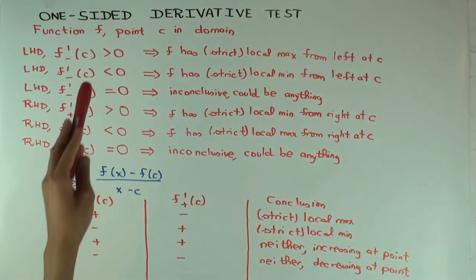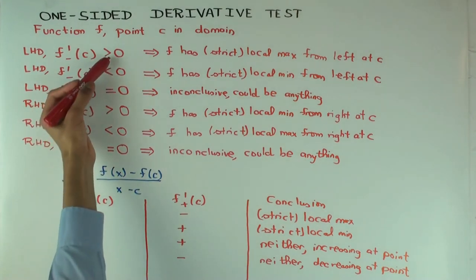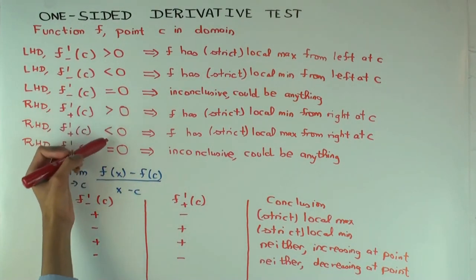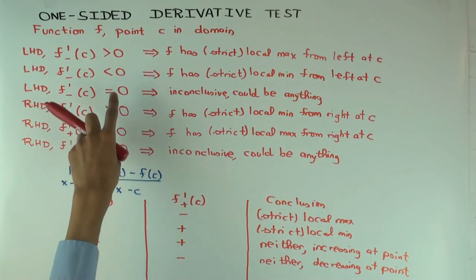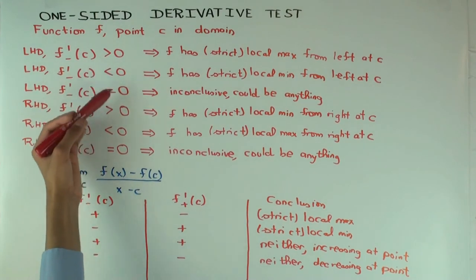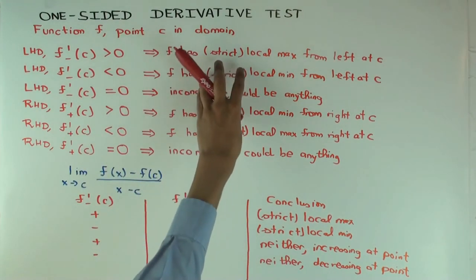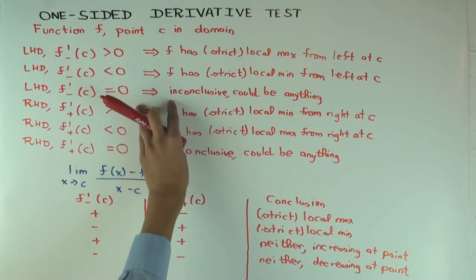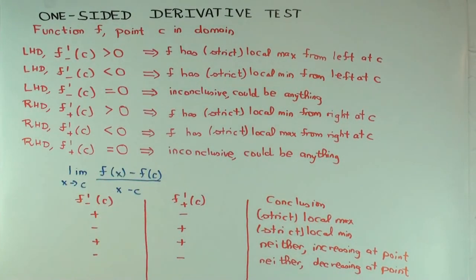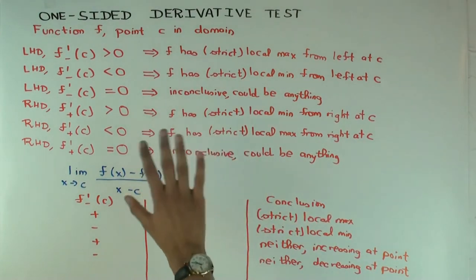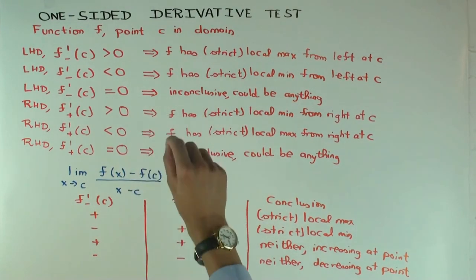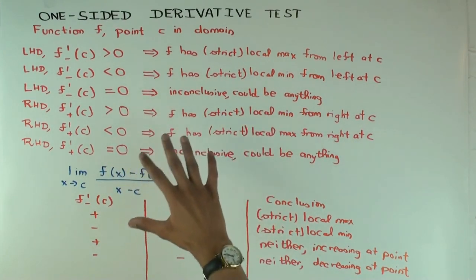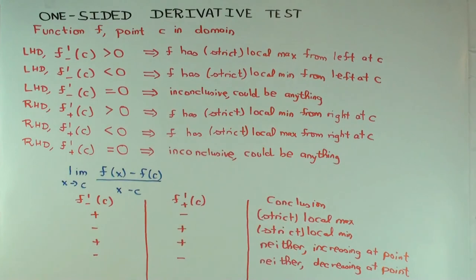Another difference: in the first derivative test you can include equality signs and just lose strictness of the conclusion. But in this one-sided test, if you put an equality sign — i.e., the one-sided derivative equals zero — you don't just lose strictness, you fall into the inconclusive case entirely. That's because the first derivative test looks at function values on the immediate left or right (where zero is allowed), whereas here you're evaluating only at the point itself, and being zero there destroys all information.